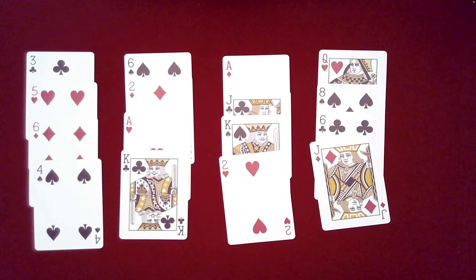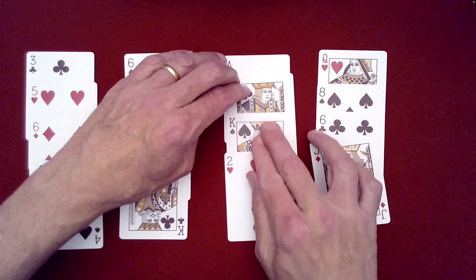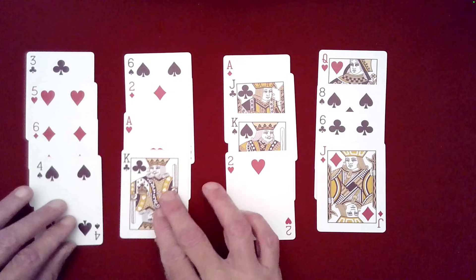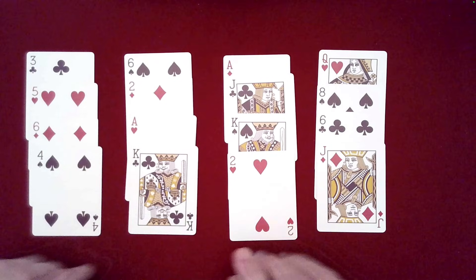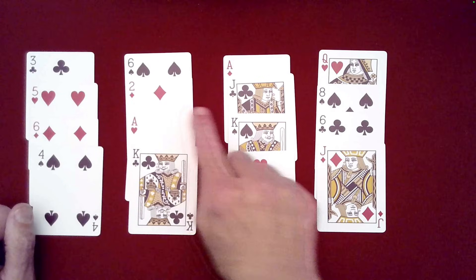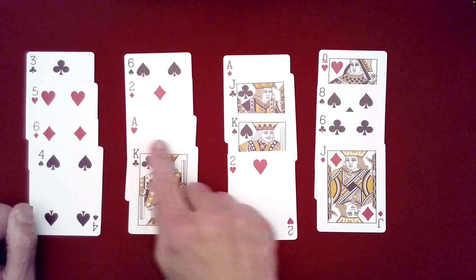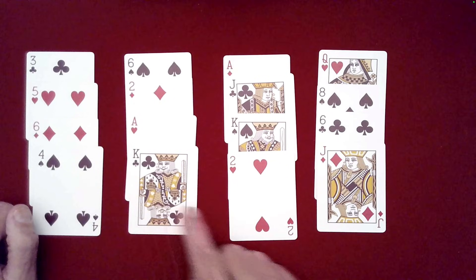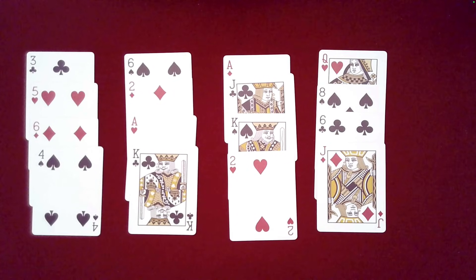In fact, even more impressive than what I just showed you, each row consists of different card values. First row, these are all distinct, these are all different suits, and these are all different suits. How in the world could we have done that with all of the random choices that you made as the spectator?